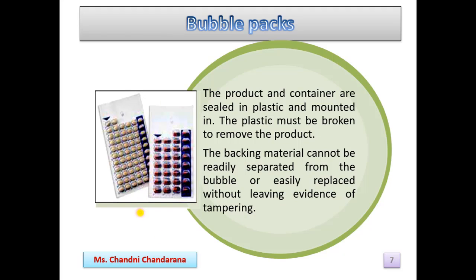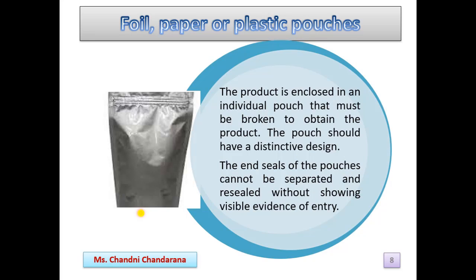The next is foil, paper, or plastic pouches. The flexible pouch is a packaging concept capable of providing not only tamper resistance but also a high degree of environmental protection through proper selection of material. A flexible pouch is usually formed during the product filling operation by a horizontal filling or sealing process. The product is enclosed in an individual pouch that must be broken to obtain the product. The pouch should have a distinctive design, and the end seals cannot be separated and resealed without showing visible evidence of entry.